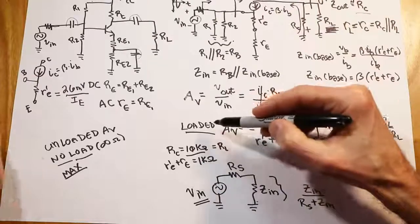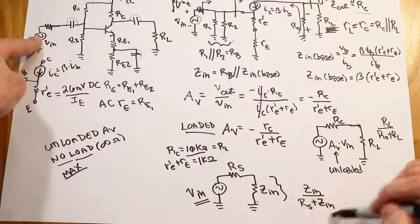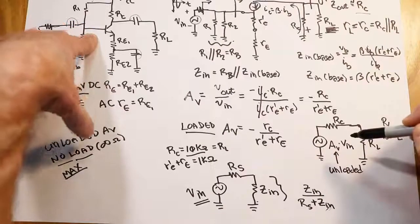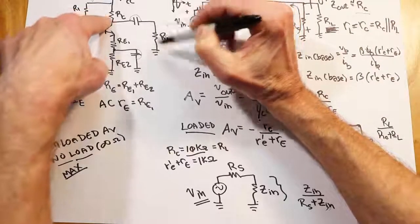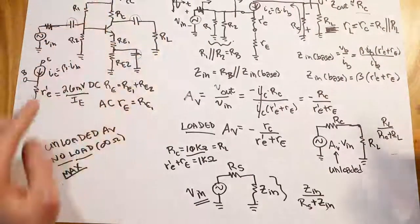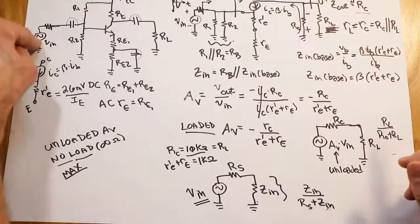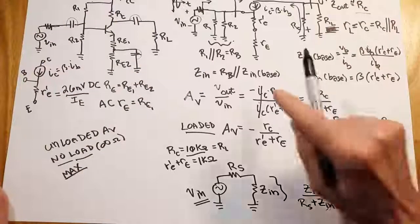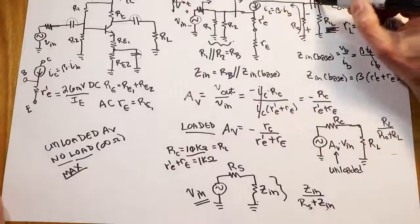So if we calculated the unloaded gain and we have a large source impedance, we take our input voltage, multiply it by this input divider to figure out how much actually gets to the base, then multiply by the unloaded gain — that gives the maximum output voltage if there's no RL. If we do have an RL, that voltage is then split down by the output voltage divider. For example, with a gain of 100, one millivolt in — ignoring source impedance — gives 100 millivolts out, but it is going to be inverted: when the input goes positive, the output goes negative.